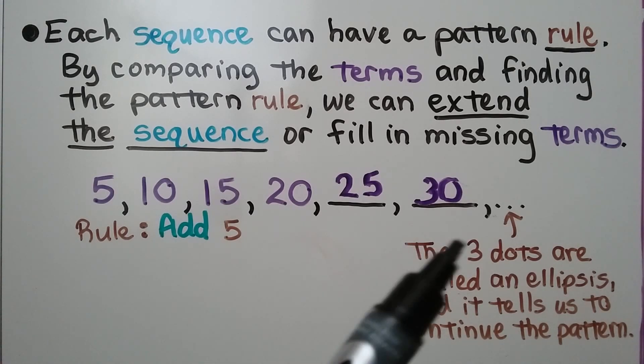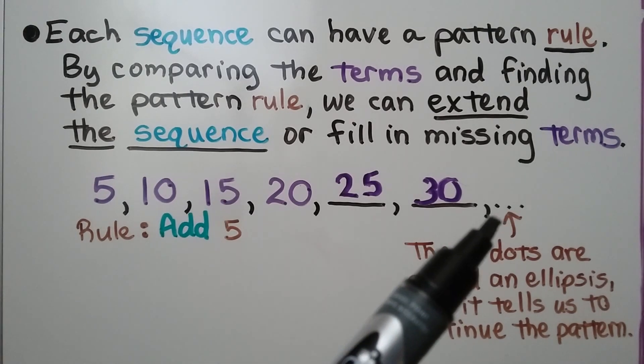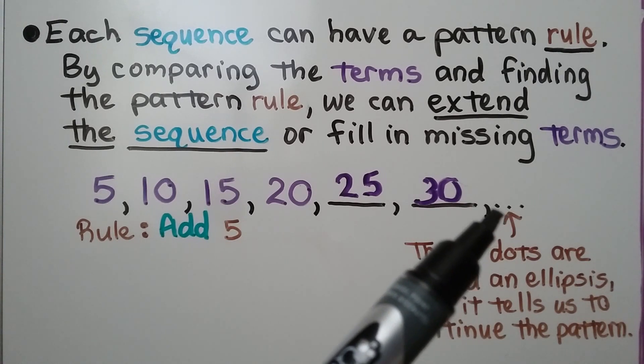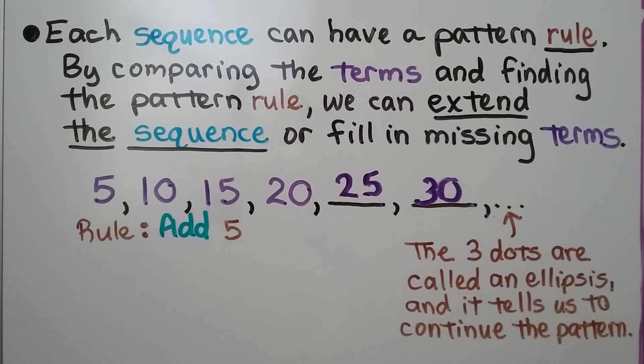You might see 3 little dots after a comma. After the last term, those 3 dots are called an ellipsis, and it tells us to continue the pattern.